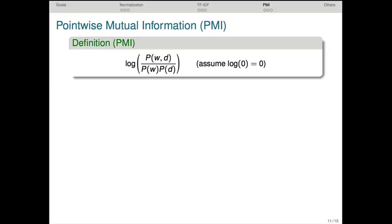Let's look at one more reweighting scheme in detail. This is pointwise mutual information, or PMI. Unlike TF-IDF, it gives the same values whether we take the row or column perspective. The numerator here is the joint probability of the word and the document, and the denominator is a product of the word probability, that is the row probability, and the document probability, or the column probability.